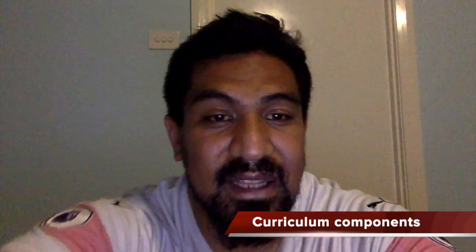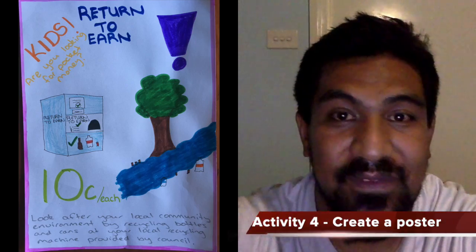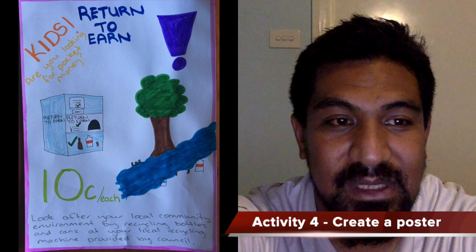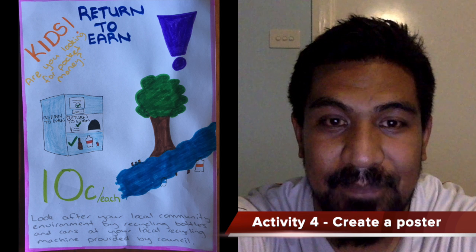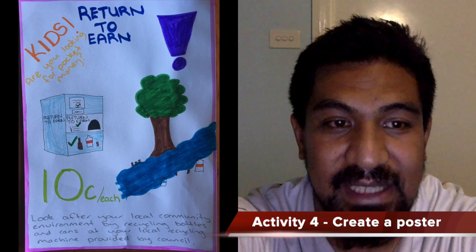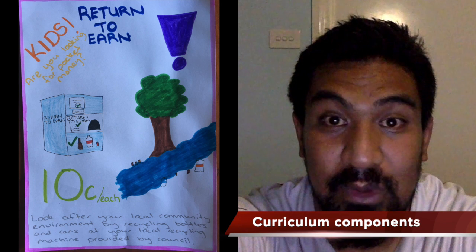The curriculum components for these activities include the effect that consumer and financial decisions can have on the individual, the broader community, and the environment, and the obligations citizens may consider they have beyond their own national borders as active and informed global citizens. Activity four requires research and selection of correct information to create a poster on sustainability. Here is the poster. The curriculum component of this activity is the display of artworks to enhance their meaning for an audience.